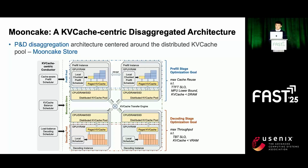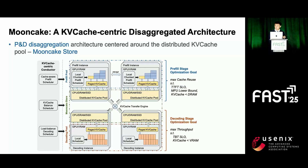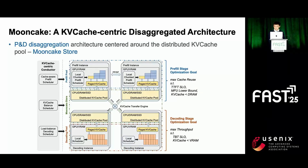According to this, we have designed and built Mooncake, a KV cache-centric LLM serving architecture. Mooncake builds an underlying infrastructure called Mooncake Store, which provides a fast, scalable, and fault-tolerant KV cache storage and transfer engine. Based on this, we have constructed a large-scale prefill-decode disaggregation inference cluster, greatly improving throughput while maintaining real-time responses.